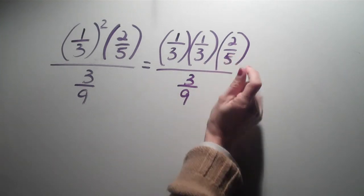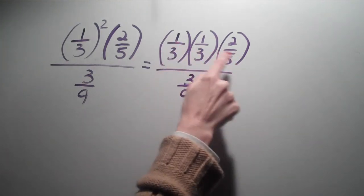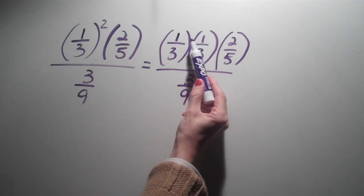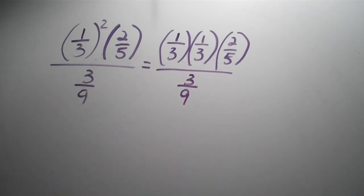So 1 third squared just simply means 1 third times 1 third. Now I have times 2 fifths to add in there. And then all over 3 over 9. If I look at this on the top, well, can I cross reduce anything there? Unfortunately, no, I can't.